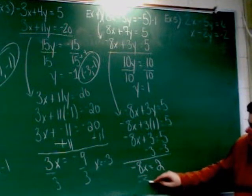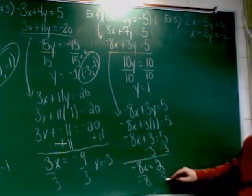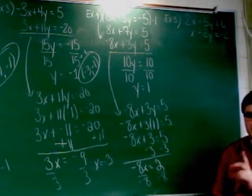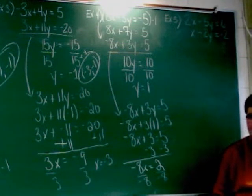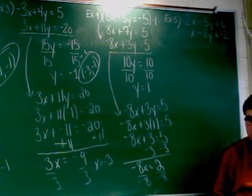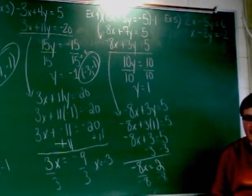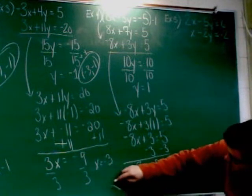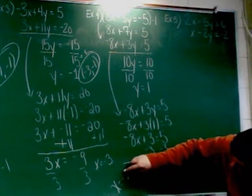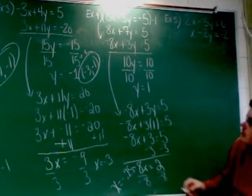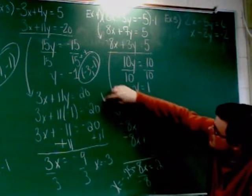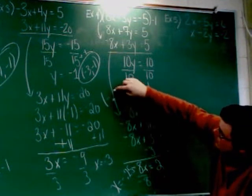Divide across by negative 8. Realize this is not negative 8 divided by 2. It is not negative 4. It's 2 over negative 8, which is a fraction. You could write negative 1/4th or negative 0.25, which I'm guessing most of you are going to write negative 0.25 because you're going to use the calculator.